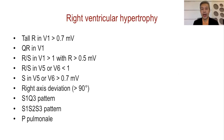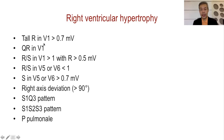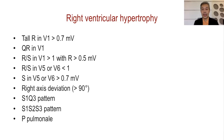Right ventricular hypertrophy has less clear criteria primarily because the right ventricle is smaller than the left. In the normal ECG, R in V1 is small and increases in amplitude from V1 to V6. If reversed — a tall R in V1 that becomes smaller toward V6 — that is suggestive of RVH. A QR pattern with a tall R in V1, a tall R with a deep S in V1 where R is greater than 0.5 millivolts, or a deep S in V6 with R-to-S ratio less than 1 are all suggestive of RVH.